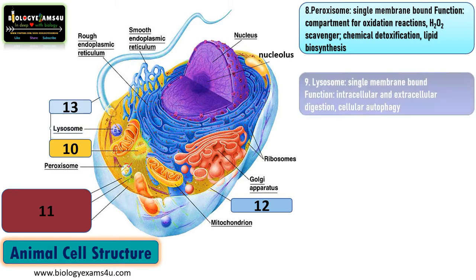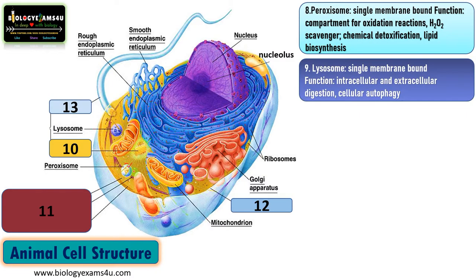The next organelle is the lysosome. Lysosome is called the suicidal bags of the cell as it contains many digestive enzymes. It is a single membrane-bound organelle. Its function is intracellular and extracellular digestion. Also, if the cell is infected, the lysosome can digest the cell — this is called autolysis or cellular autophagy. It has a slightly acidic pH of around 5, at which the majority of digestive enzymes work. Because it has digestive enzymes capable of degrading the entire cell, it is called the suicidal bags of the cell.